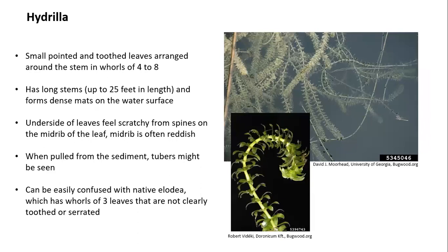Hydrilla has very small pointed and toothed leaves — you'll want a hand lens to look at the leaf margins. Look for leaves in whorls of four to eight. The stems can grow really long, up to 25 feet or more, and they form really dense mats on the water's surface. The underside of the leaves feels scratchy because of little spines on the midrib, which you can also see with your hand lens. The midrib on hydrilla is often reddish in color, and when pulled from the sediment, you might see tubers attached to the base. Hydrilla can be confused with native elodea, but elodea has whorls of three leaves and no clear serrated pattern on the leaf margins.